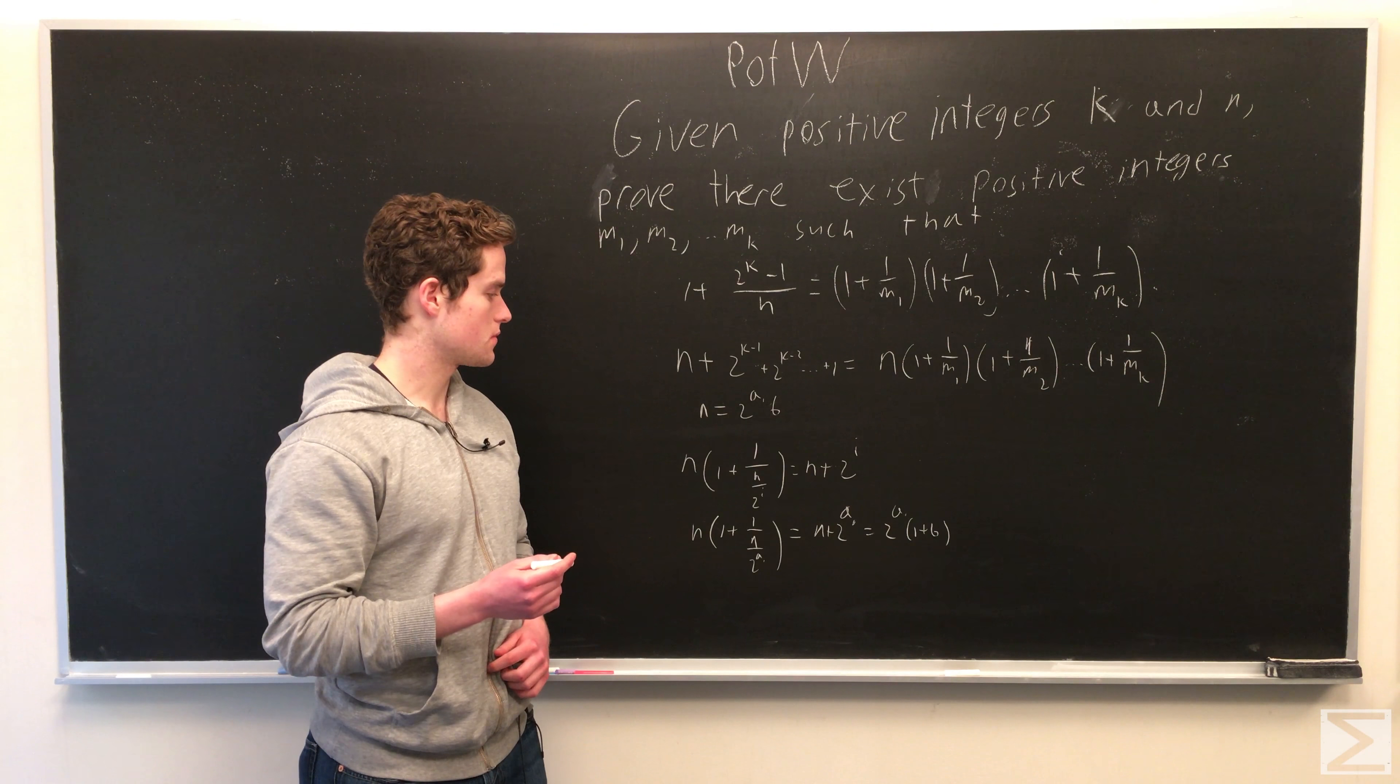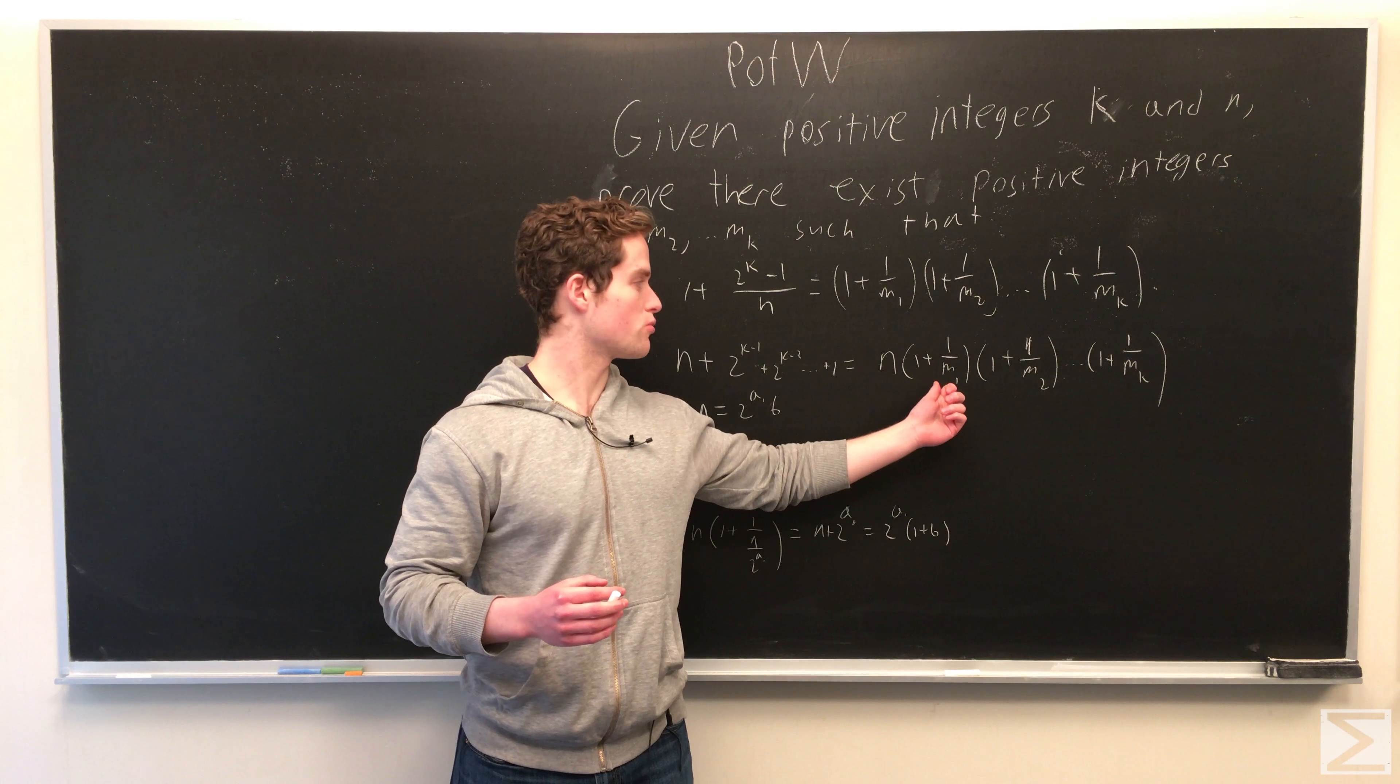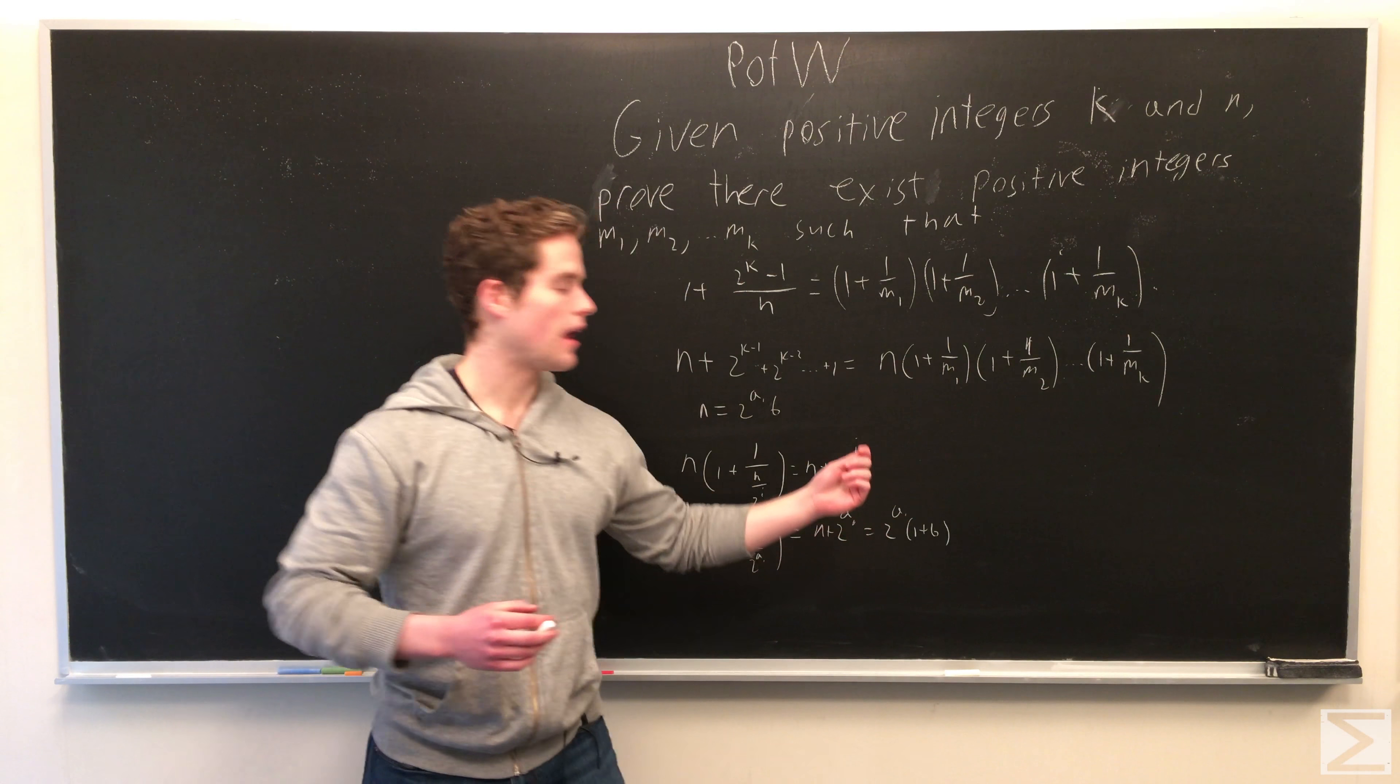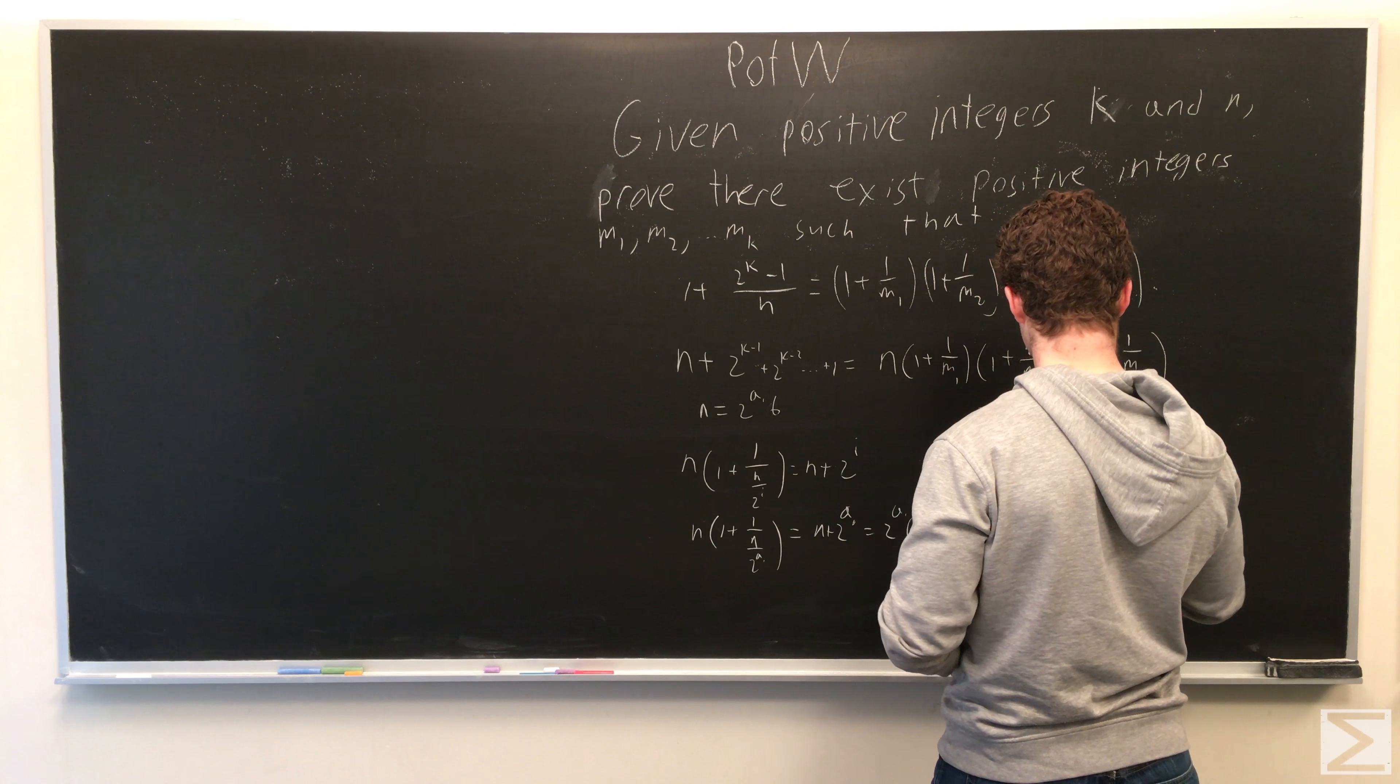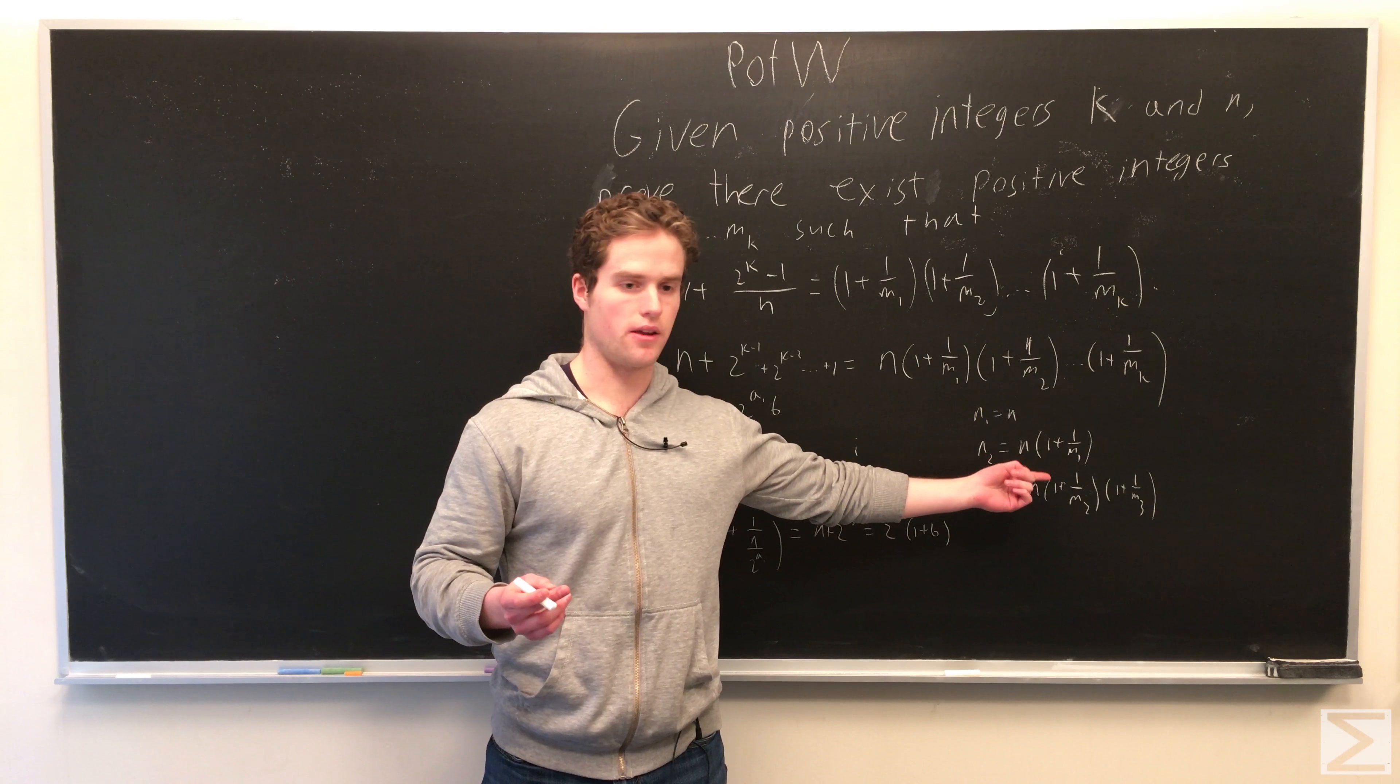So we can proceed as follows. Let's say a1 is less than or equal to k minus 1. Then we can keep multiplying 1 plus 1 over n over 2 to the a1, and then our new m will just be the previous product. So m1 here will just be n over 2 to the a1.